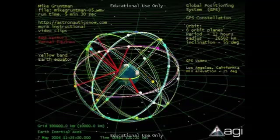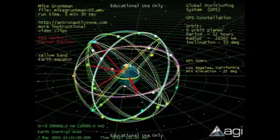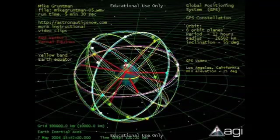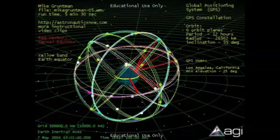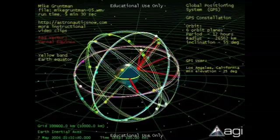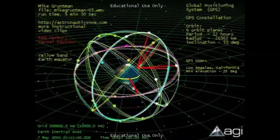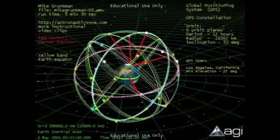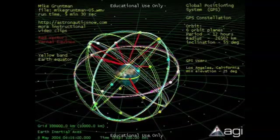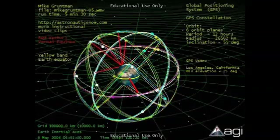Adding more satellites to the constellation increases the reliability and robustness of the system. Today, in 2007, there are 30 operational satellites. Our simulations show 29 satellites. You can see that the user on the ground always receives signals from at least four GPS satellites simultaneously.